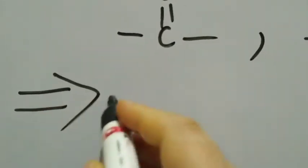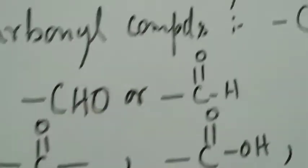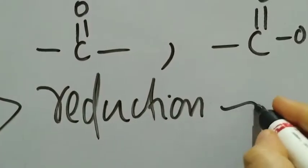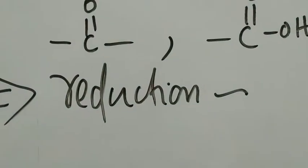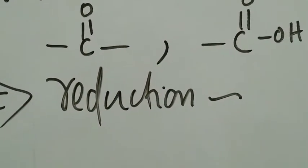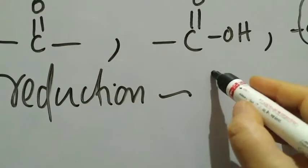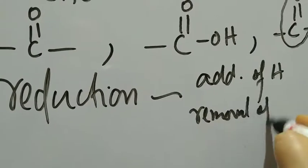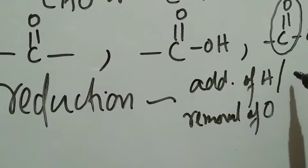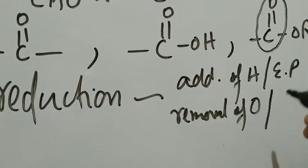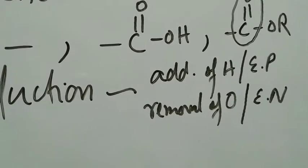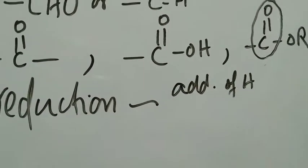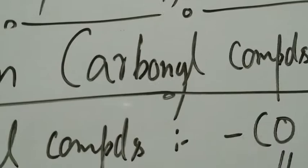In this method of preparation, we will carry out the reactions of aldehydes, ketones, carboxylic acids, and esters to see how they give us alcohols. The process by which we can prepare an alcohol from a carbonyl compound is reduction. Reduction has many definitions — addition of hydrogen, removal of oxygen, addition of any electropositive element, or removal of any electronegative element. In this preparation, we will simply be adding hydrogen to prepare an alcohol from a carbonyl compound.